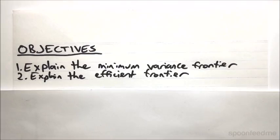So having shown how the expected value and standard deviation of the returns of a portfolio are calculated, it's now time to start having a look at how we can select portfolios. So we're going to go into the minimum variance frontier and the efficient frontier.